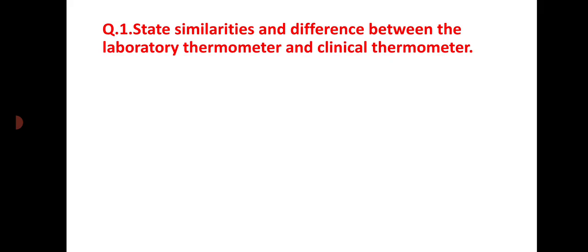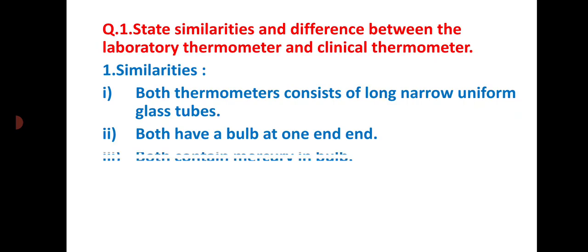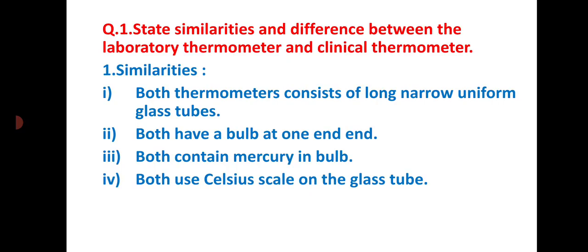In this question they are asking about the differences between laboratory thermometer and clinical thermometer. First we see the similarities. Both thermometers consist of long narrow uniform glass tubes. Both have a bulb at one end. Both contain mercury in the bulb. Both use Celsius scale on the glass tube.